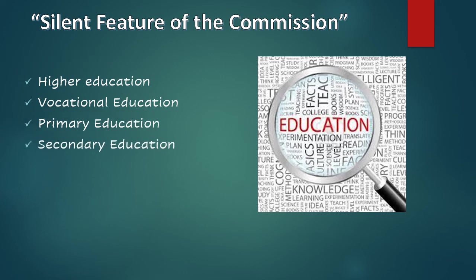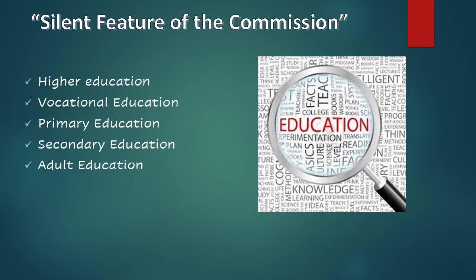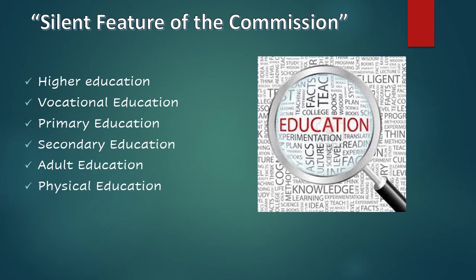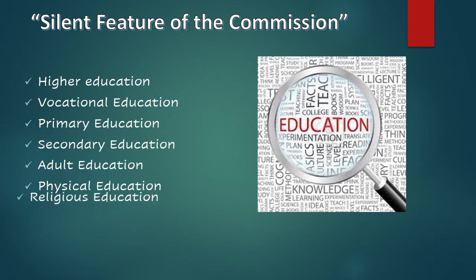Secondary education was also made compulsory and free. Adult education was included, covering universities and colleges as individual educational institutions. Physical education was included at both the primary and secondary levels. Finally, religious education was emphasized as very necessary in this stage of Pakistan's education.